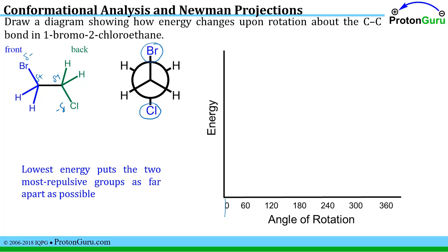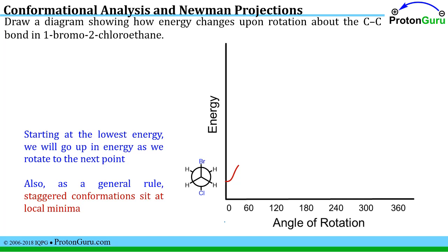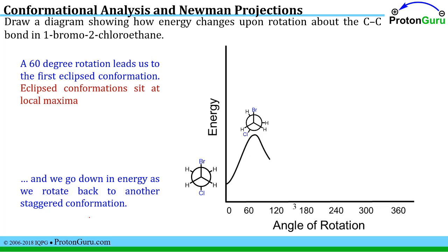So let's say we start at zero degrees — we haven't rotated around any bonds yet. We put our Newman projection at that point on the diagram. Now we start rotating around that carbon-carbon bond — the front carbon we can see and the back carbon we can't — and think about how the energy will change. We started staggered, and since that's the lowest possible energy, the energy has to go up from there. We rotate 60 degrees to the first eclipsed conformation. Staggered conformations always sit at local minima, and eclipsing conformations always sit at local maxima — a good rule to remember for problems like this.